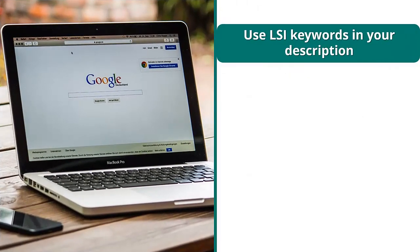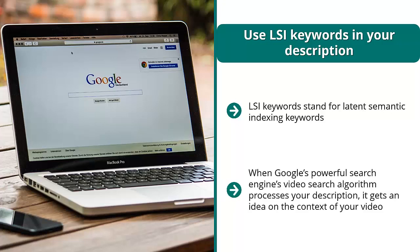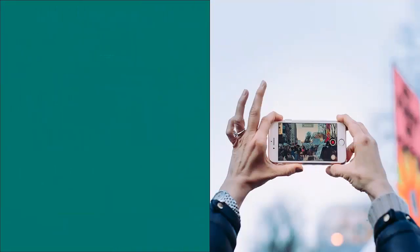Use LSI keywords in your description. LSI keywords stand for latent semantic indexing keywords — these are keywords that are thematically related to your target keyword. When you find the most related keywords to your target keyword and put them in a description that makes grammatical sense and flows naturally, you're creating context. When Google's video search algorithm processes your description, it gets an idea of the context of your video — it's not just some random video that popped up; it has a specific context.